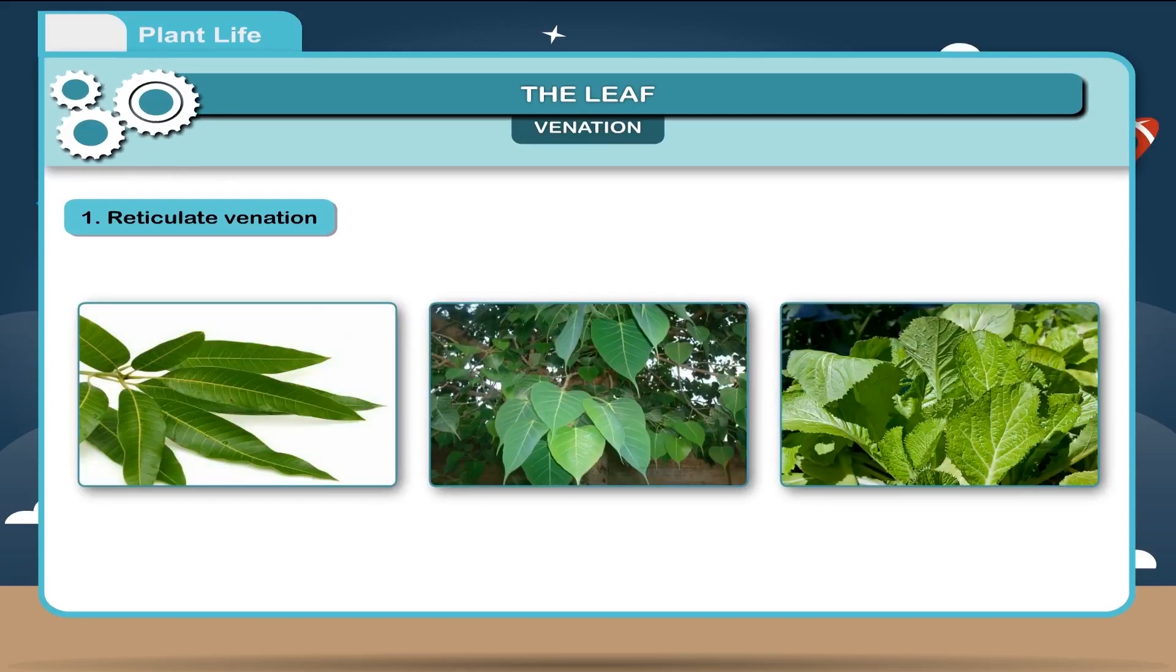First, reticulate venation. When the veins and veinlets are irregularly distributed forming a network, it is called reticulate venation. This kind of venation is found in the leaves of mango, banyan, and mustard.